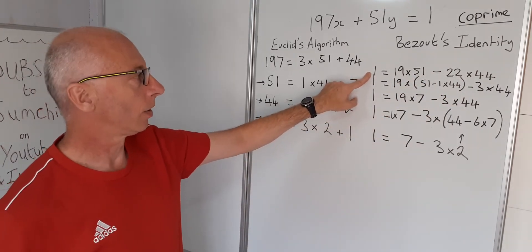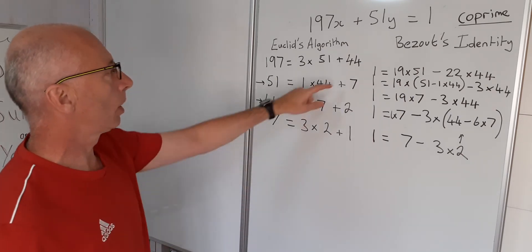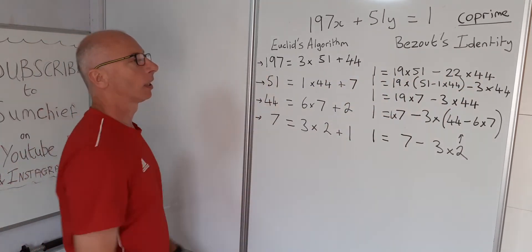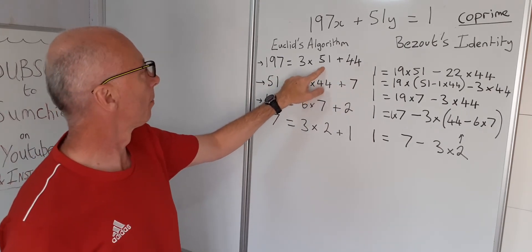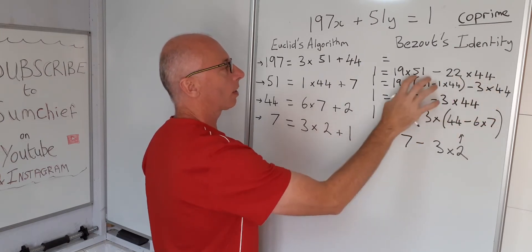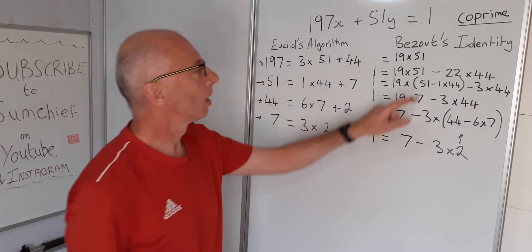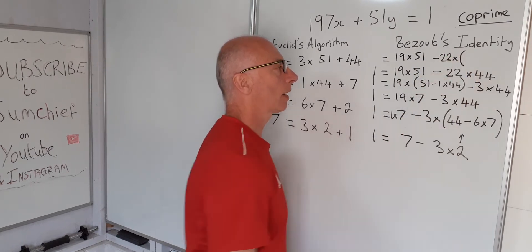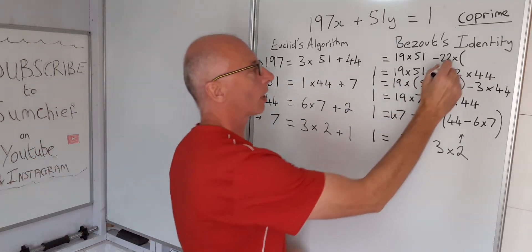That's still going to give us our 1, so we're on track here. Okay, now what we do is we know what 44 is, because that's the remainder here. So now we go for this one. Then the 44 we know is 197 minus 3 times 51. So that's what we're substituting in. So we can continue writing this one as it is: 19 times 51 minus 22 times open bracket, so the 44, 197 minus 3 times 51.